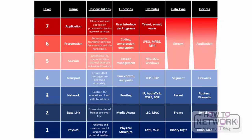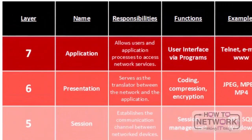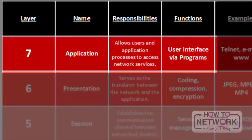Let's get granular and learn about these layers in detail, starting with the application layer, which is layer seven. Everything at this layer is application specific — it supports the application and end-user processes, but also defines who the communication partners are, quality of service, and user authentication. All of these application-specific settings are determined here and will be dealt with at the lower layers. This layer provides application services for things such as file transfers, email, and other networked software services.